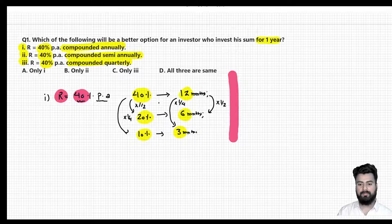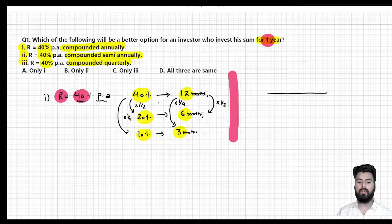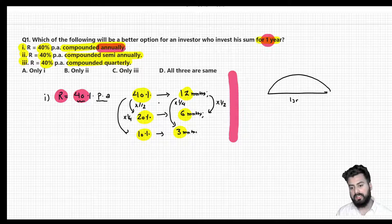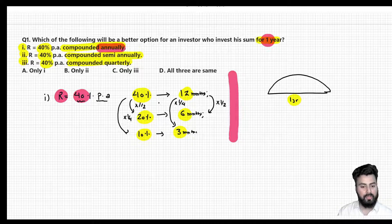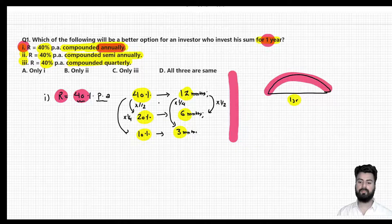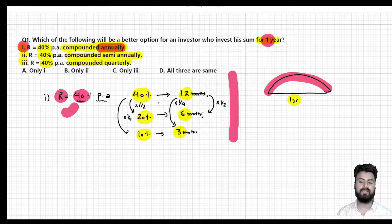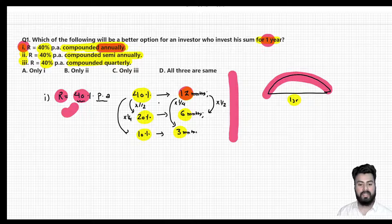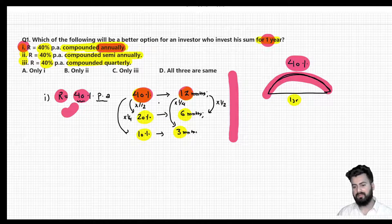Rate is 40% per annum, time period is 1 year. For a time period of 1 year with compounding on annual basis, the number of compounding periods are going to be 1 only. And the rate applicable would be full — 40% only — no need to change the value of rate. Since the change is happening only once, there is no need to use successive percentage change. Effective rate would be directly 40% only.